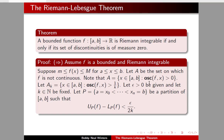Note that A is the set of x in the closed interval [a, b] such that the oscillation of f at the point x is greater than zero. Now we're going to break this set down into certain subsets. Let A sub k be the set of x in [a, b] where the oscillation of f at x is greater than 1/k.